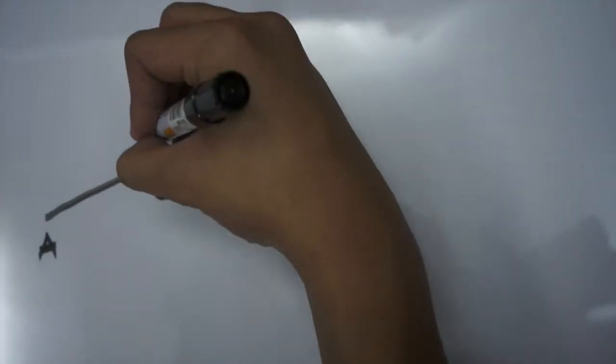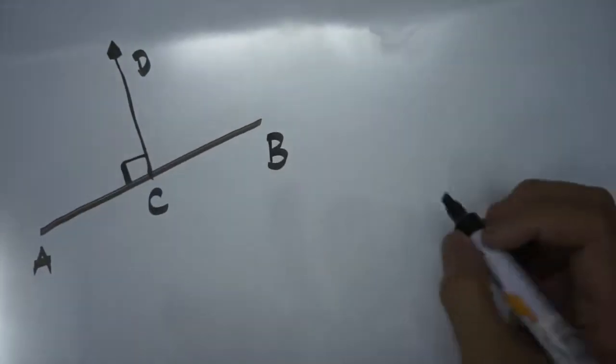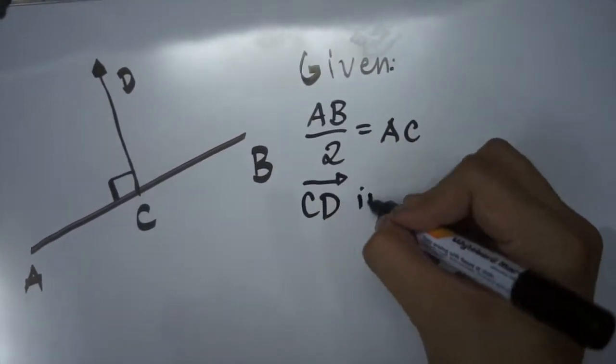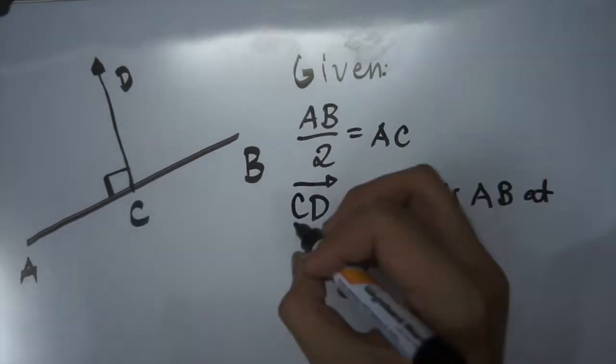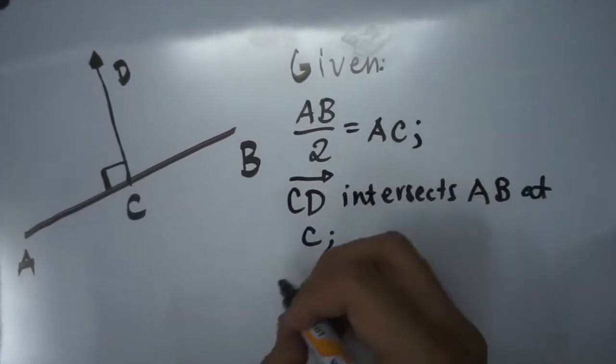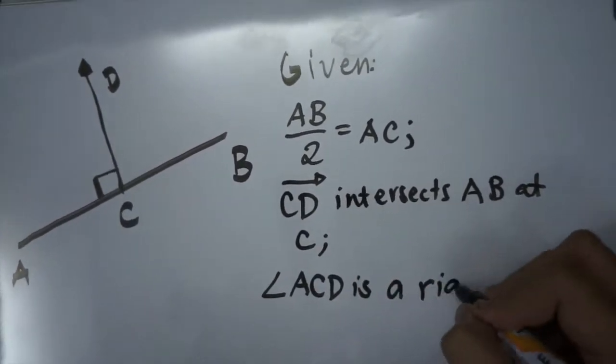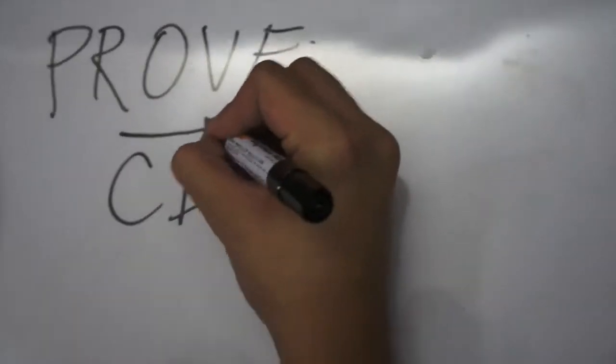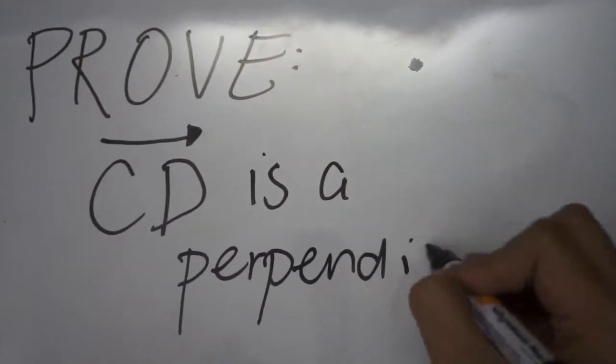Okay guys, so let's look at the given figure and the given statements. The given statements that go with this given figure is that AB over 2 equals AC, ray CD intersects AB at point C, and that angle ACB is the right angle. With this given, we're asked to prove that ray CD is a perpendicular bisector.